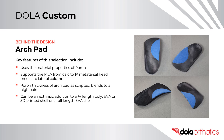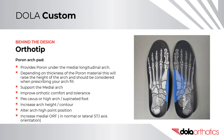The pour-on thickness of the arch pad is as scripted and blends to a high point. It can be an extrinsic addition to a three-quarter length poly, EVA, or 3D printed shell, or on a full-length EVA shell. Ortho Tip – A pour-on arch pad is a dorsal addition under the medial longitudinal arch. Depending on thickness, it raises the arch height and should be considered when prescribing arch fill. It can support the medial arch, improve orthotic comfort and tolerance in a pes cavus or supinated foot, increase arch height or contour, alter the arch high point, or increase the medial orthotic reaction force.